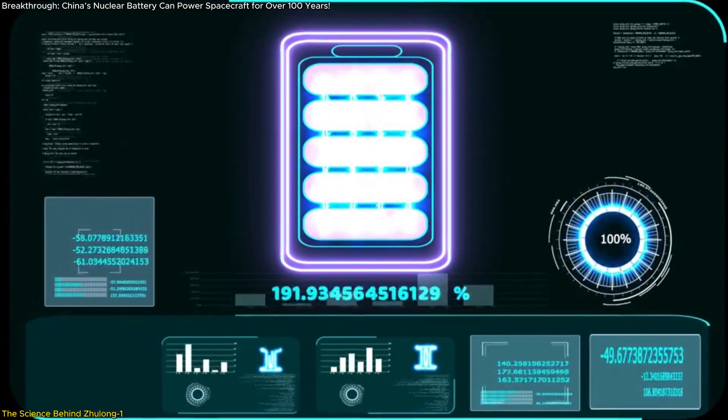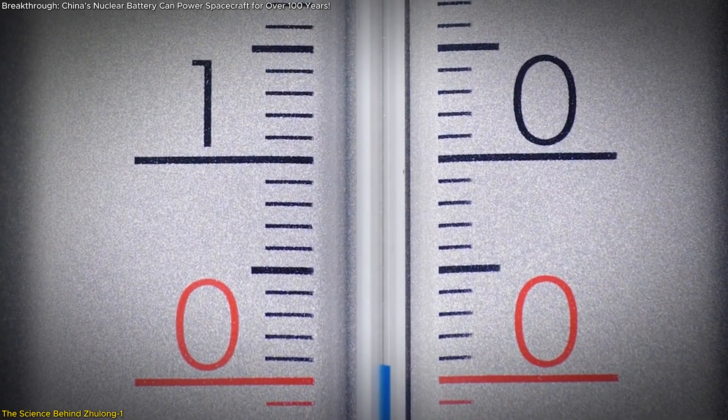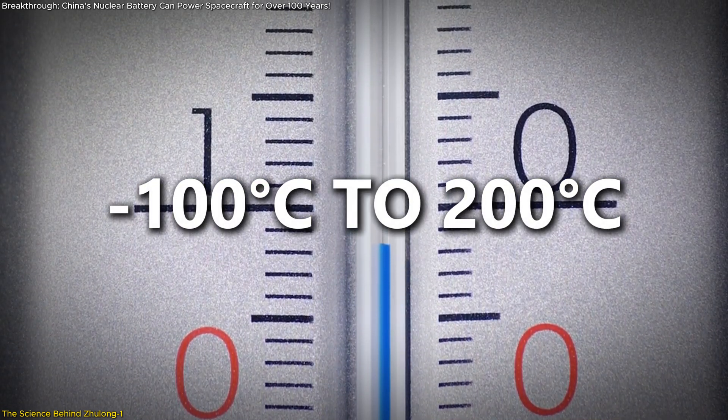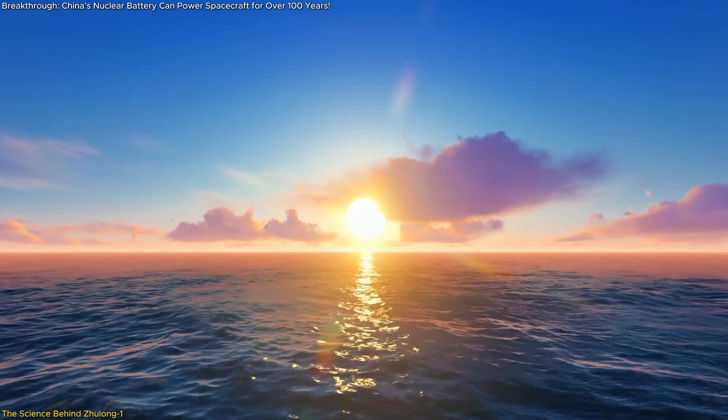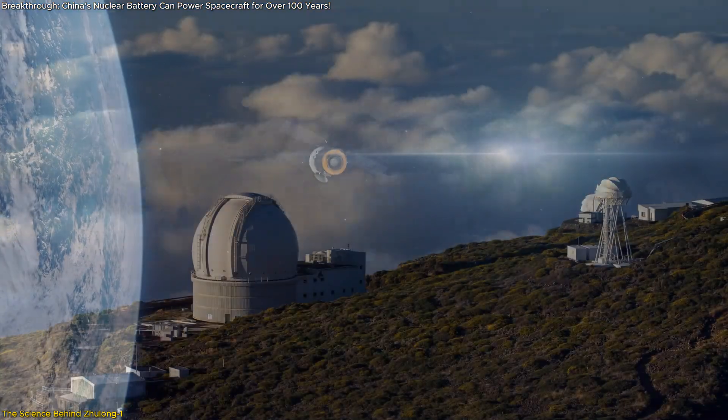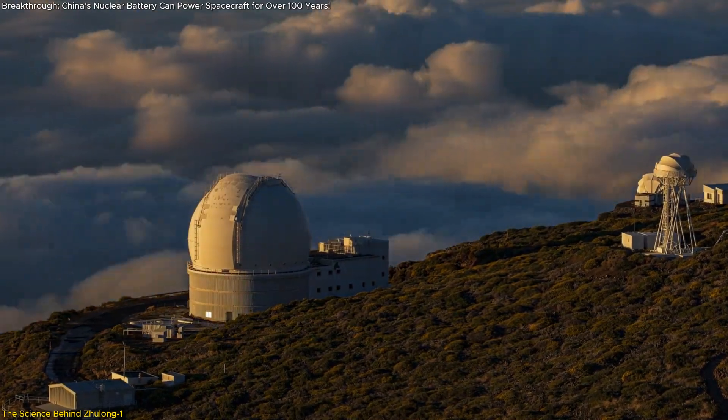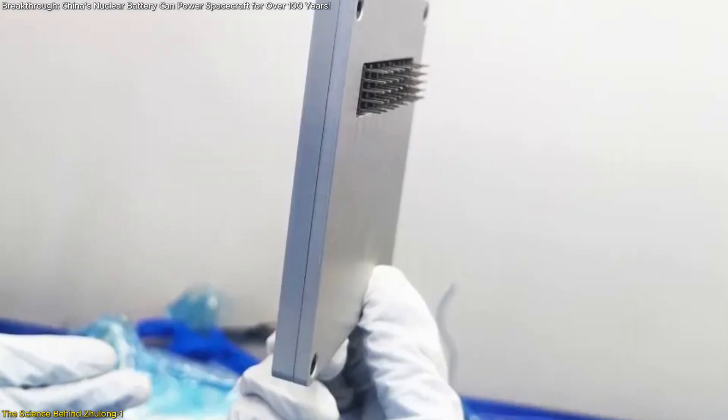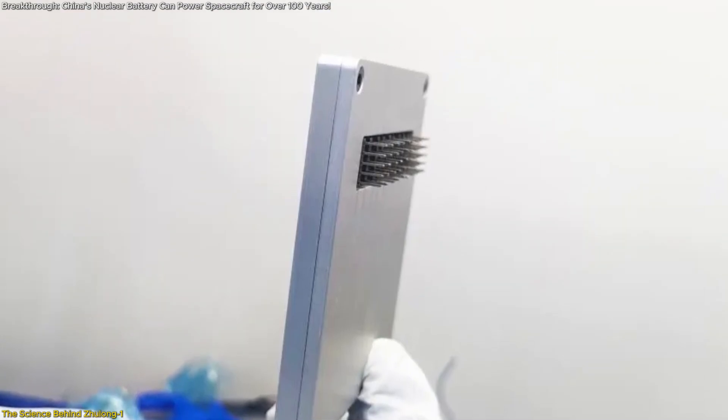Its resilience in extreme conditions sets it apart, as it can operate within a temperature range of minus 100 degrees Celsius to 200 degrees Celsius. This makes it a viable power solution for deep-sea exploration, space missions, and remote research stations where traditional power sources struggle to function. Additionally, it maintains a degradation rate of less than 5% over 50 years, ensuring long-term reliability.